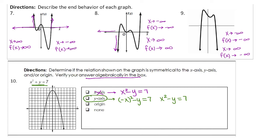We also need to check the origin, because some problems are symmetric about multiple parts. With the origin, we substitute in negative x and negative y. That does not bring us back to the original function — we did not get positive y. So we are not symmetric about the origin, and we are finished.